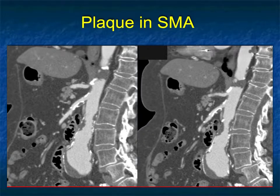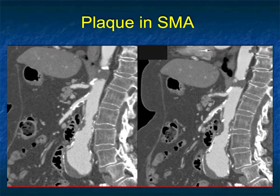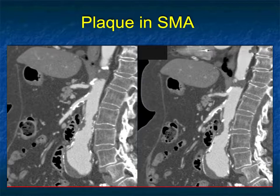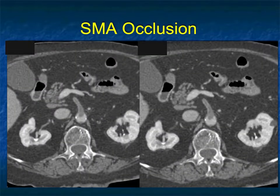One very important reminder: on every case, but especially when thinking about ischemic bowel, you need to look at the mesenteric vessels. Are they patent? You need to follow the vessels down — not just at the origin, where you may see plaque but the SMA and celiac are patent — but all the way down to make sure there's no occlusion more distally.